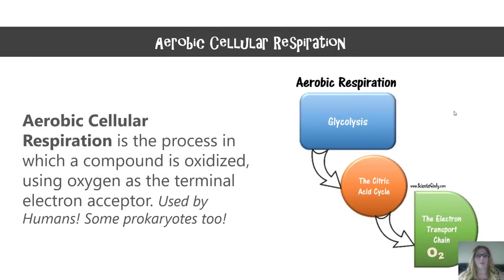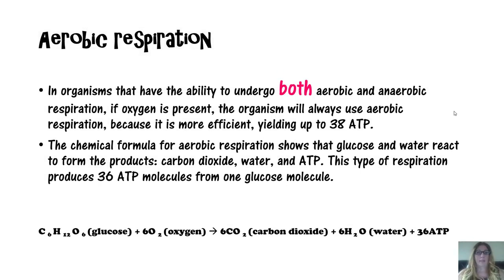Aerobic cellular respiration uses oxygen as the terminal electron acceptor, and is used by humans as well as some prokaryotes. In organisms capable of both aerobic and anaerobic respiration, if oxygen is present the organism will always use aerobic respiration because it is more efficient, yielding up to 38 ATP molecules. The chemical formula for aerobic respiration shows glucose and water reacting to form carbon dioxide, water, and ATP — producing 36 ATP molecules from one glucose molecule.